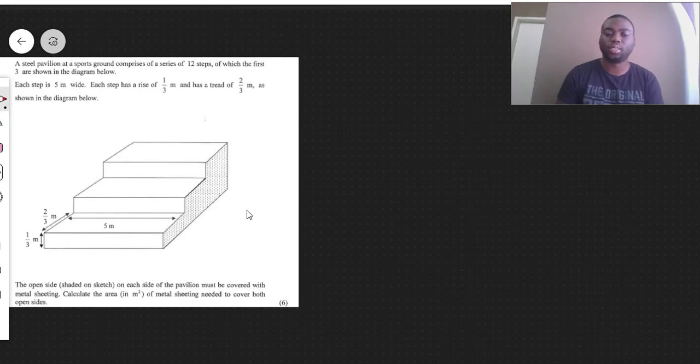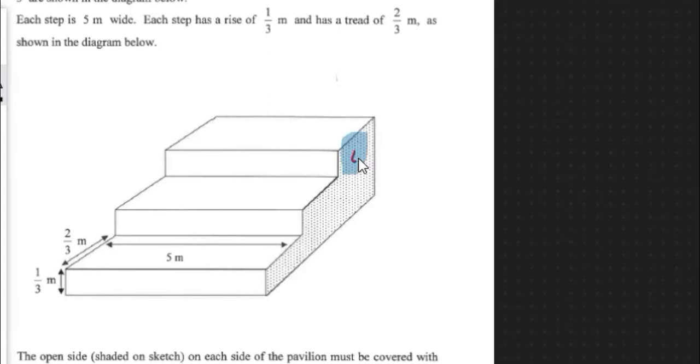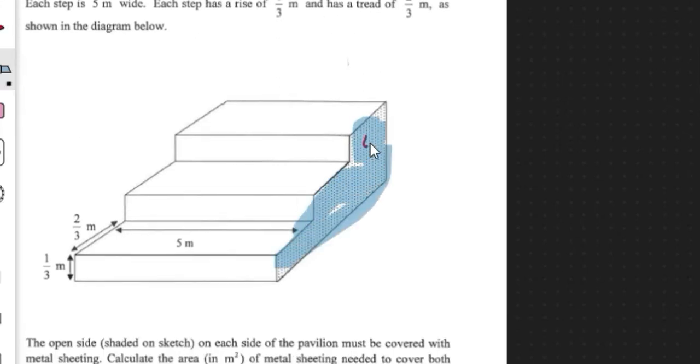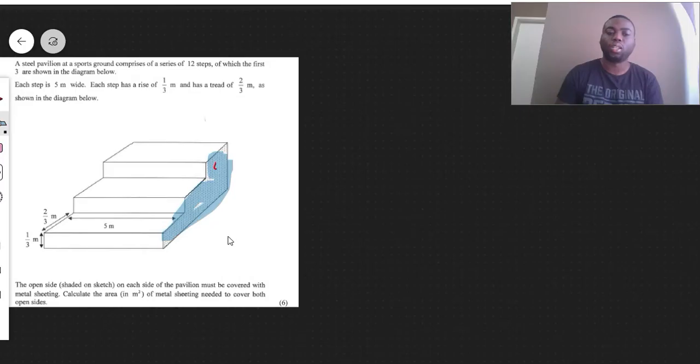The open side shaded on the sketch, this side over here, on each side of the pavilion must be covered with metal sheet. And it calculates the area in meters squared of the metal sheet needed to cover both sides.